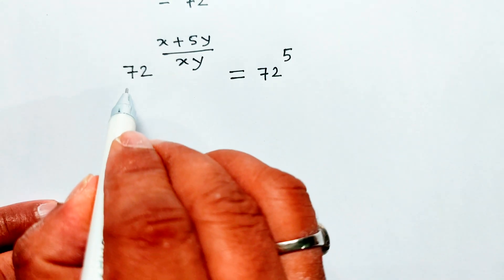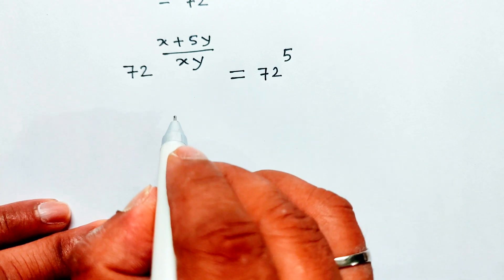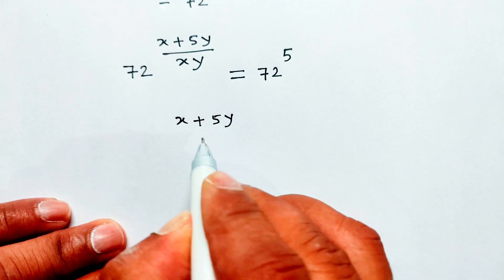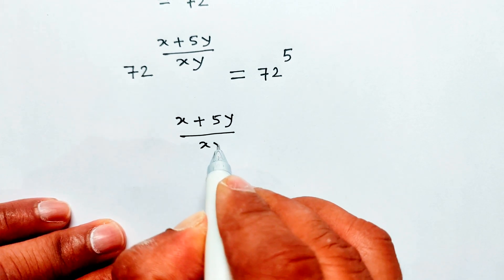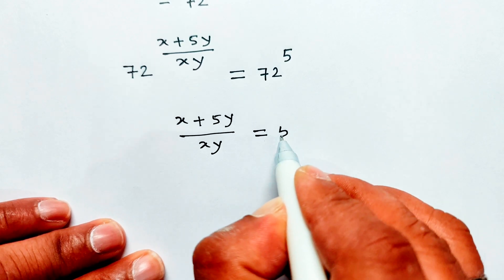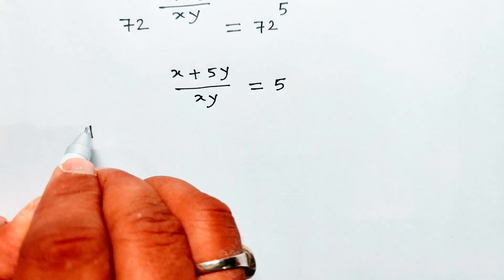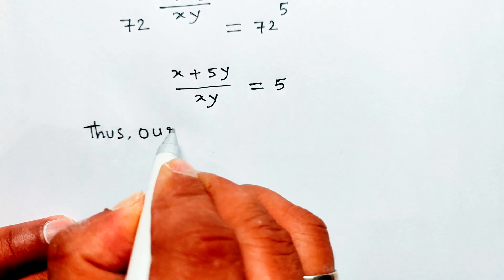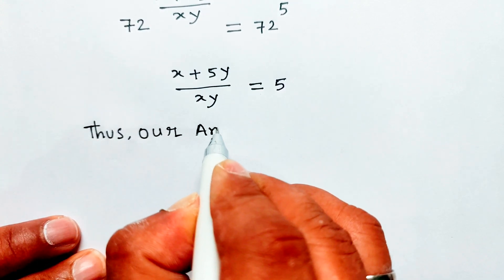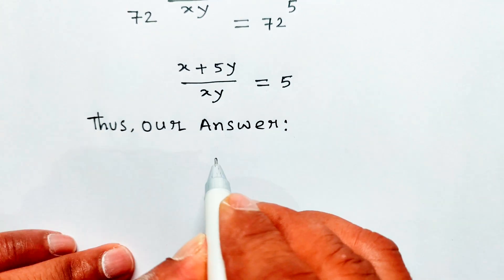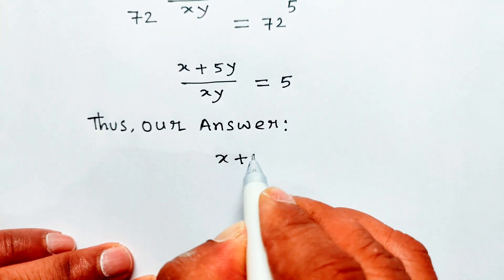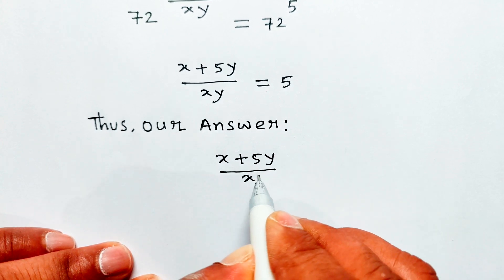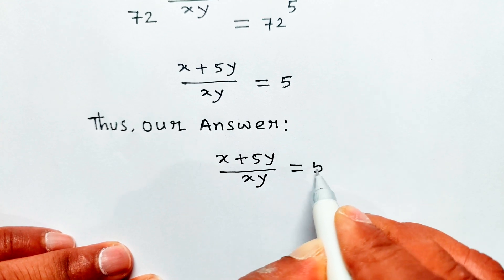Then x plus 5y divided by xy equal 5. Thus our answer: x plus 5y divided by xy equal 5.